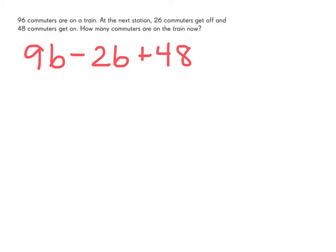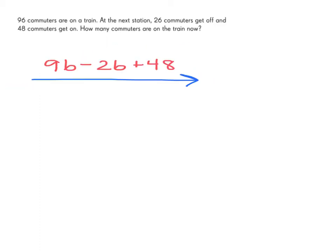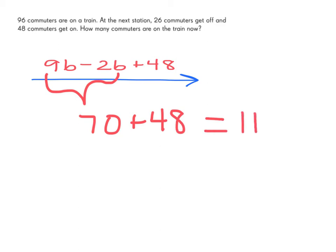Now how do we solve this in the correct order? Order of operations tells us that we work from left to right. So let's solve this numeric expression: 96 minus 26 equals 70 plus 48. 70 plus 48 equals 118, giving us the answer that 118 commuters are now on the train.